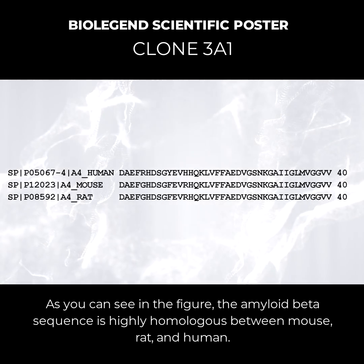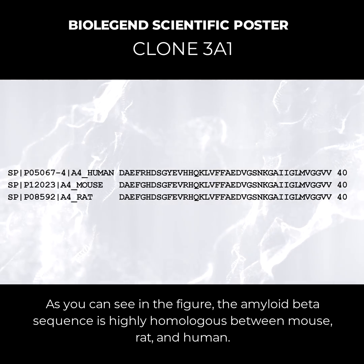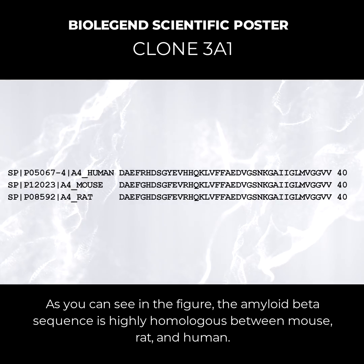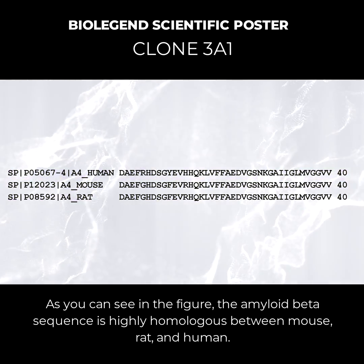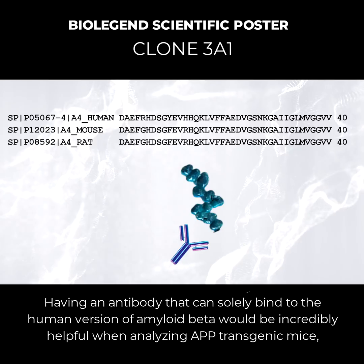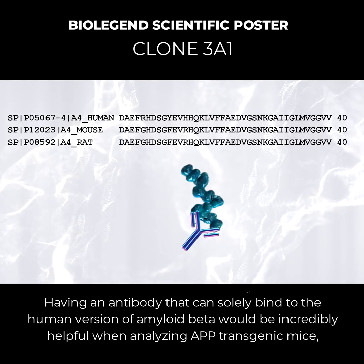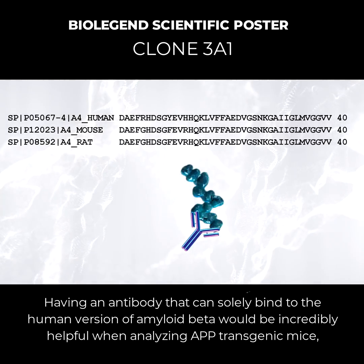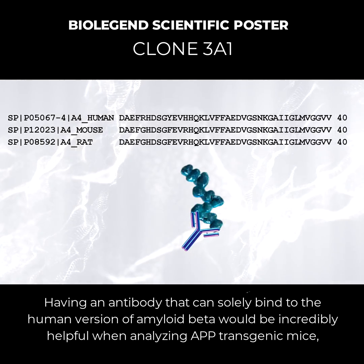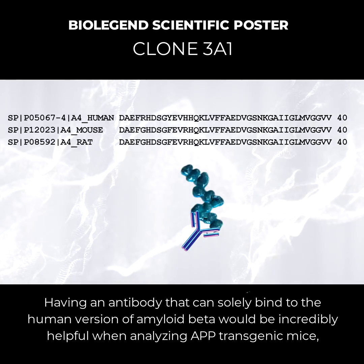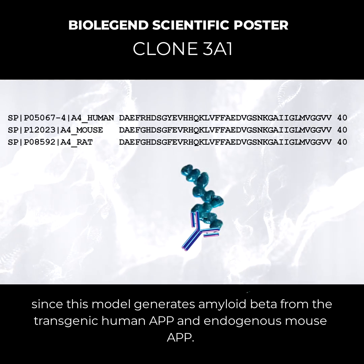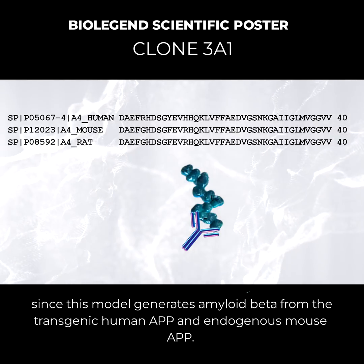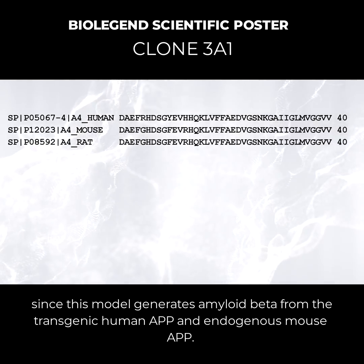As you can see in the figure, the amyloid beta sequence is highly homologous between mouse, rat, and human. Having an antibody that can solely bind to the human version of amyloid beta would be incredibly helpful when analyzing APP transgenic mice, since this model generates amyloid beta from the transgenic human APP and endogenous mouse APP.